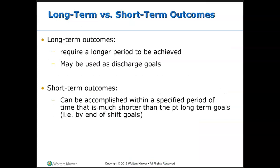Outcomes can be either long-term or short-term. Long-term goals are usually accomplished by discharge, while short-term goals are usually within your shift in the hospital setting. In a doctor's office, a long-term goal might be achieved by the next office visit. Short-term goals are given a time frame like end of shift or a specific date — a much shorter time frame. Our goal from the previous example is short-term because we want the patient's pain controlled by the end of this shift, not by discharge.